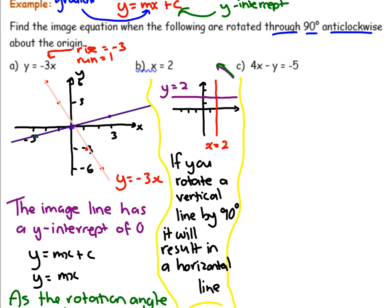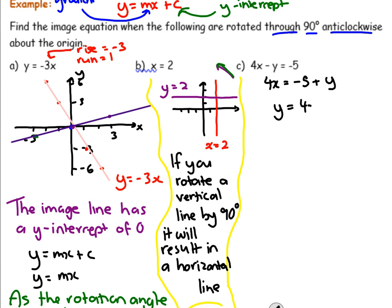We've got another one: 4x minus y equals negative 5. I personally find it a bit easier to rearrange to make it y equals first. So we can go: 4x equals negative 5 plus y, so y equals 4x plus 5. y equals 4x plus 5 is actually our equation, rearranged. Now I'm going to sketch that and do a bit of rotation.